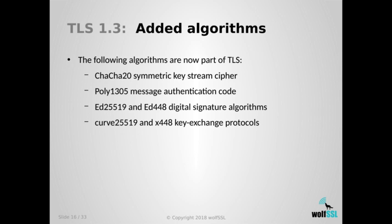Also ED25519 — or more specifically X25519, a key exchange protocol — is reasonably fast because it uses very short private key sizes. So even generating common ephemeral keys between two peers doesn't take very long on a device that's not running at a very fast CPU speed.